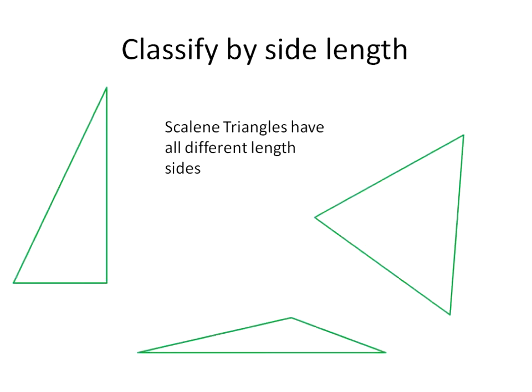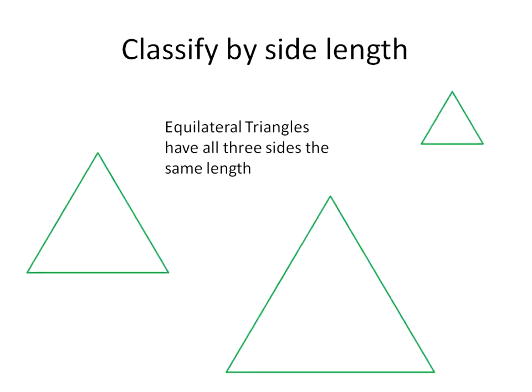A scalene triangle is a triangle that has three sides that are all different lengths. Here's an example of a right triangle with three different side lengths. Here's an obtuse triangle with three different side lengths. And this one here appears to be an acute triangle with all three different side lengths. A scalene triangle means that all three side lengths are different — it can be any type of angle measurements, but what we're classifying by now is the side length.